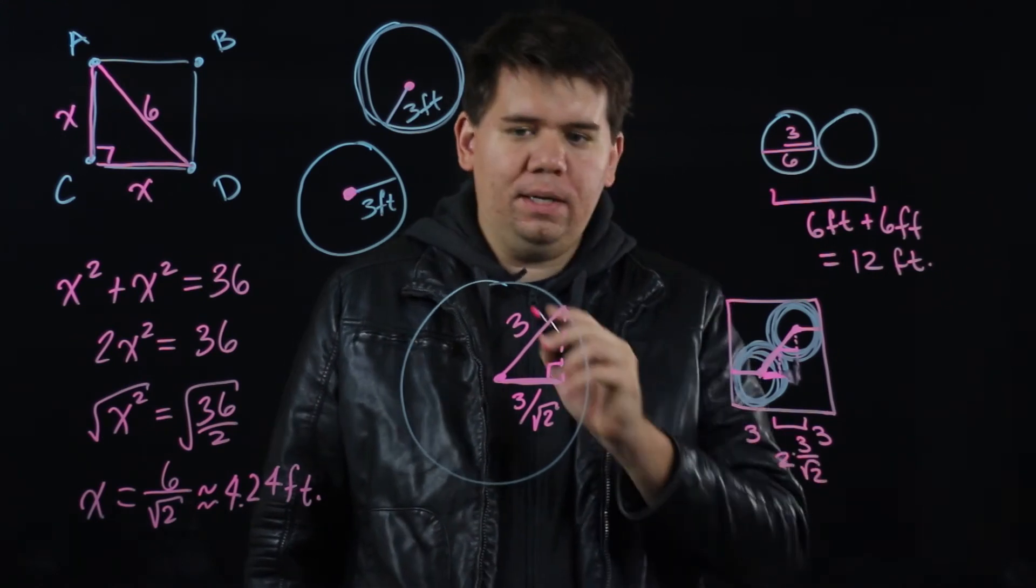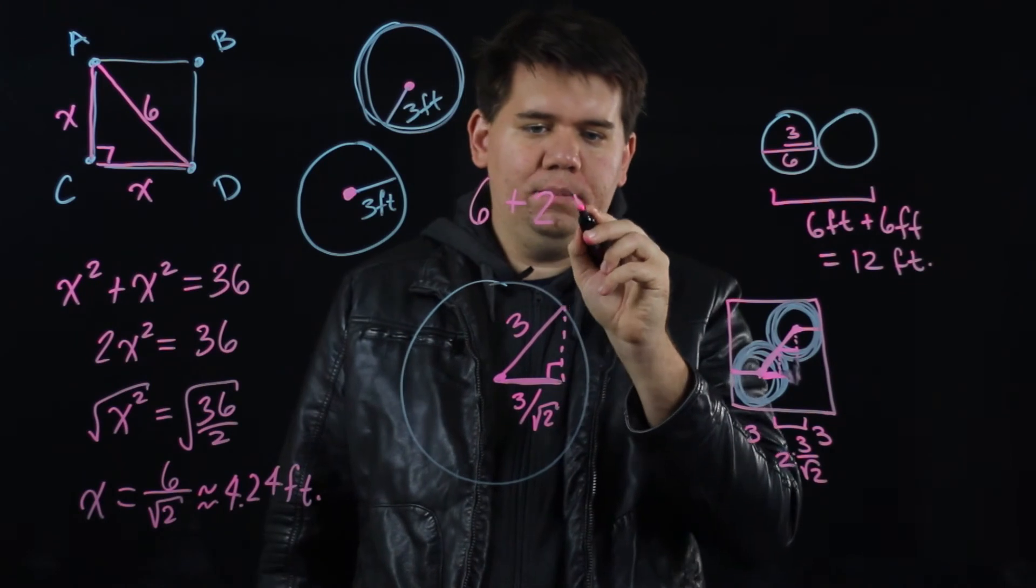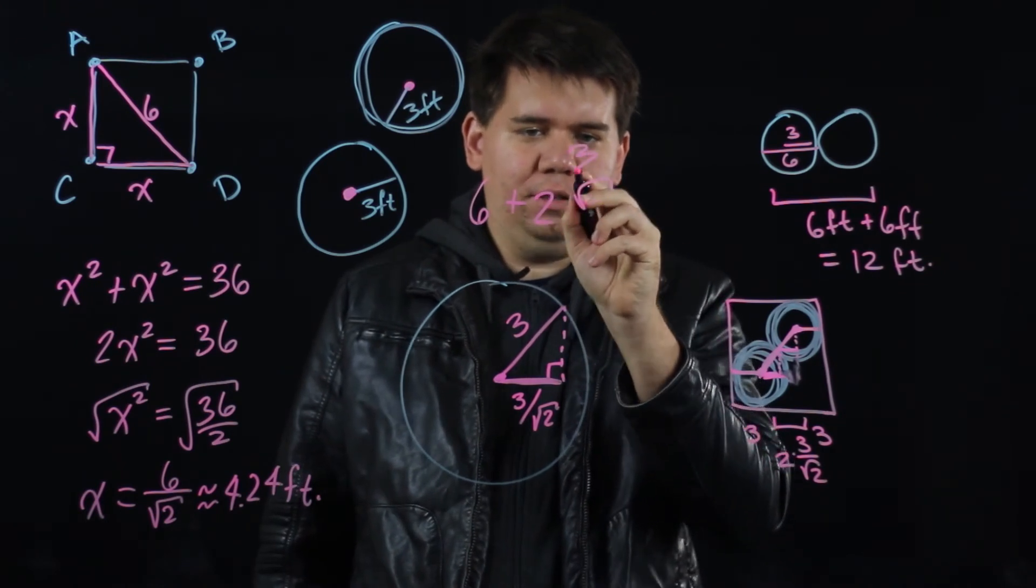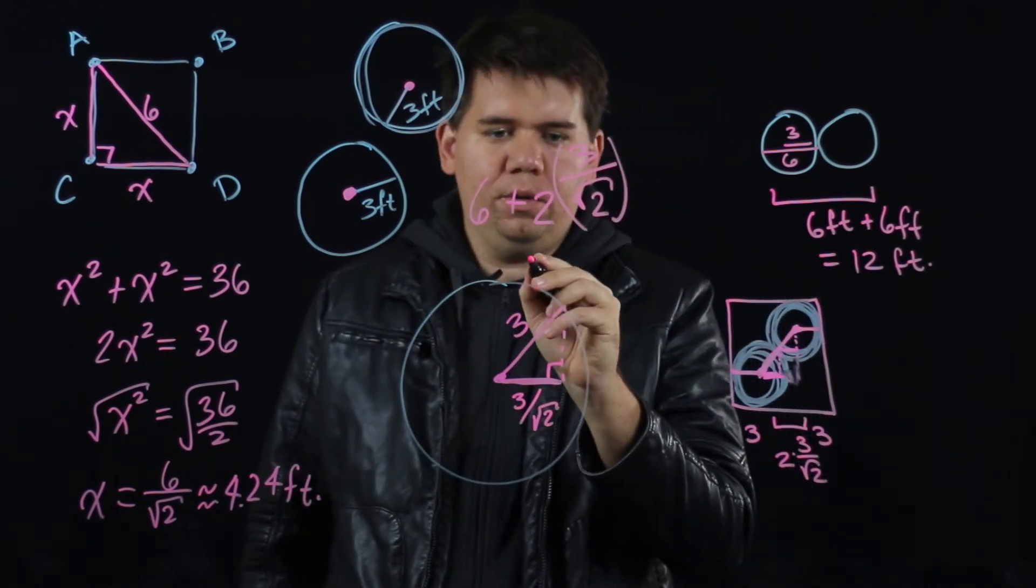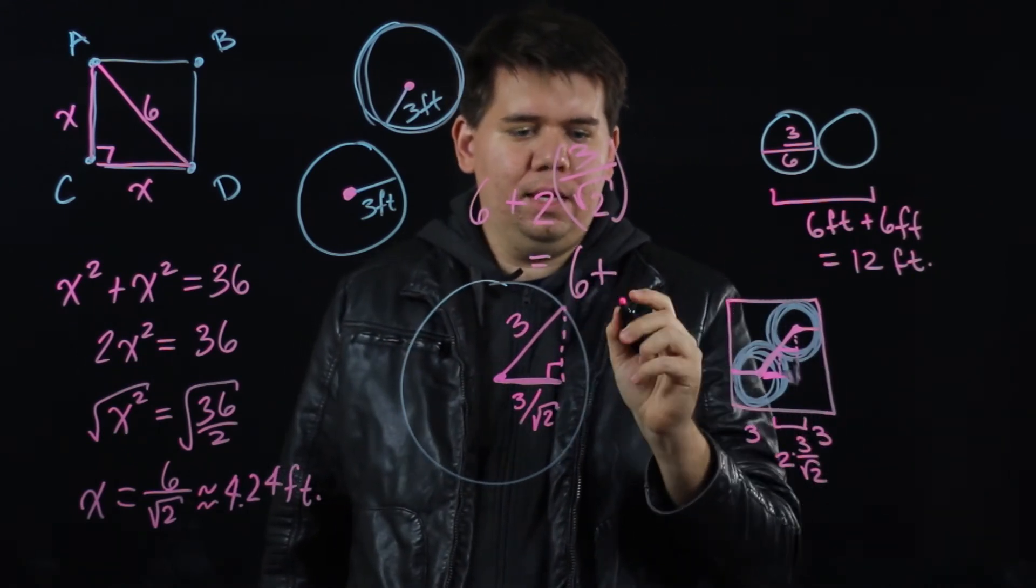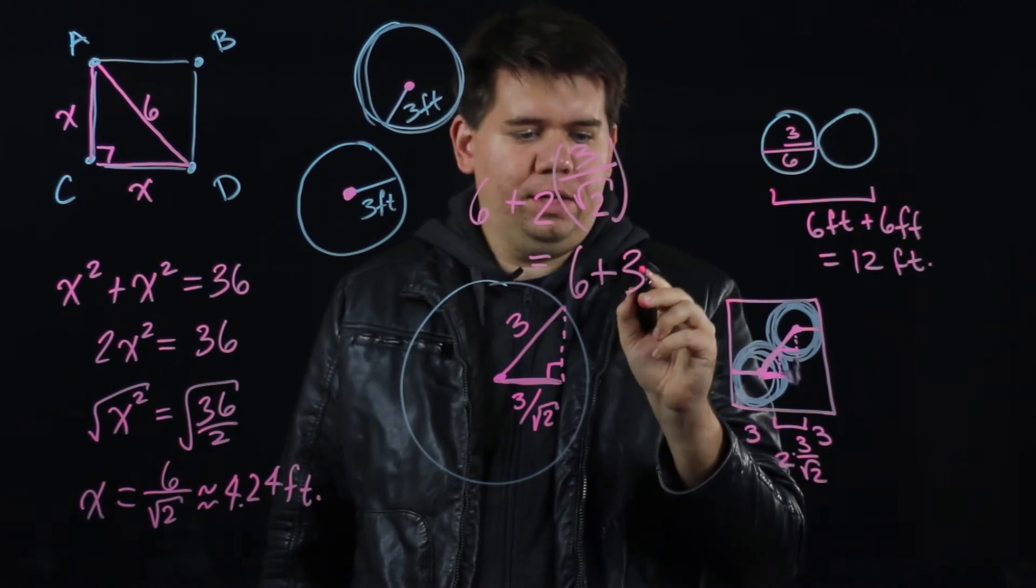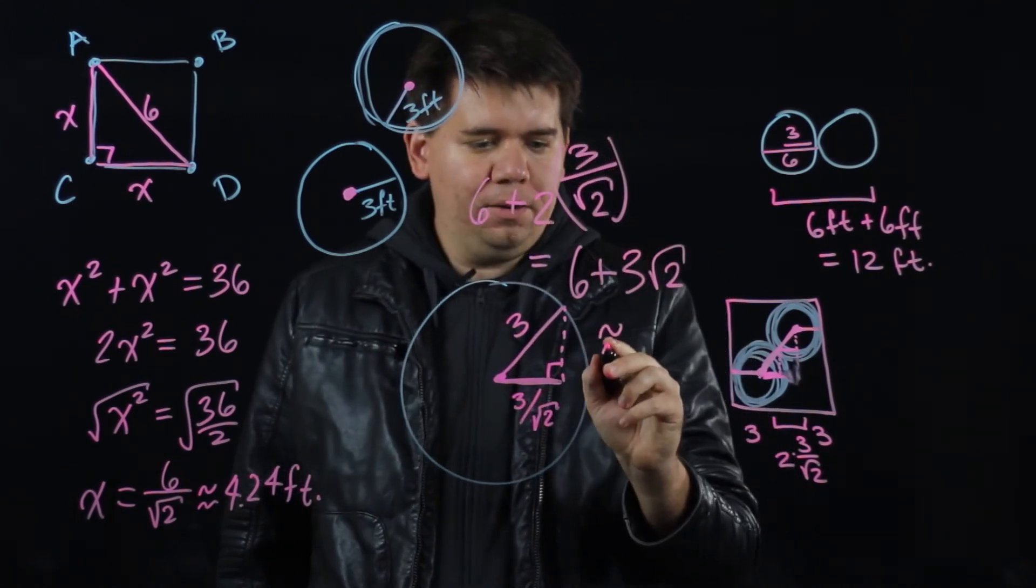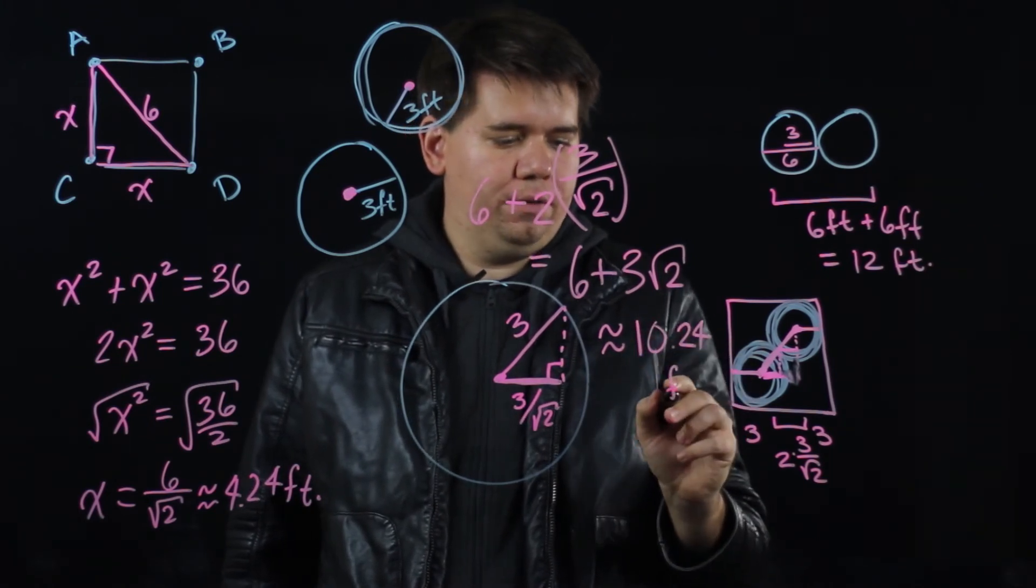My 3 plus 3 gives me 6 plus 2 times the square root of 3 divided by the square root of 2, which is equal to 6 plus the 2 and the square root of 2 simplify to just 3 times the square root of 2 or about 10.24 feet.